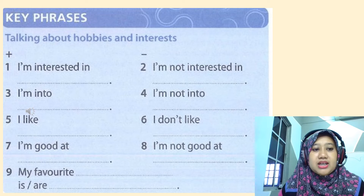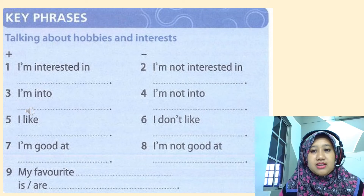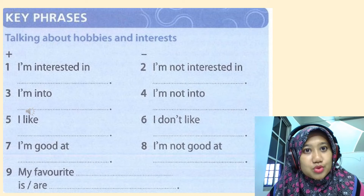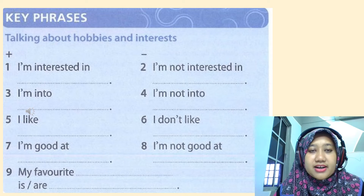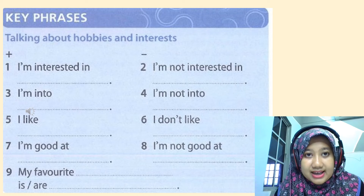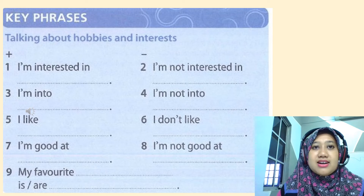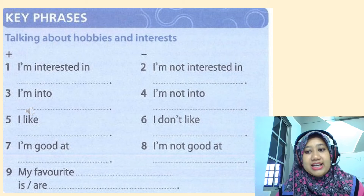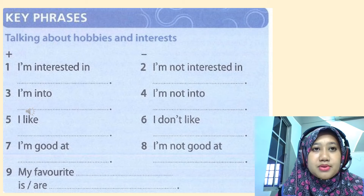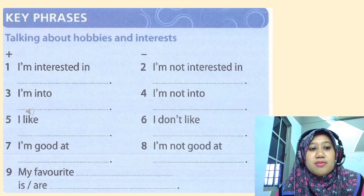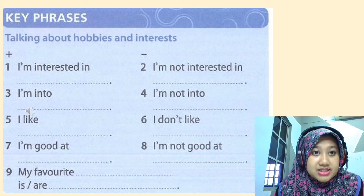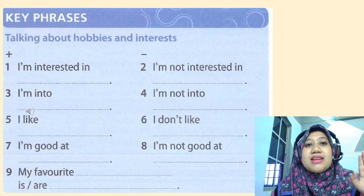I hope you listened carefully. I want to emphasize number 9 — 'My favourite is' and 'My favourite are.' When do we use 'is'? When do we use 'are'? 'Is' is for singular, 'are' is for plural. For example: my favourite animal is a cat. Or if it's plural: my favourite animals are cats and dogs. You can also say: my favourite sport is badminton, or my favourite sport is archery. If you like both: my favourite sports are badminton and archery.